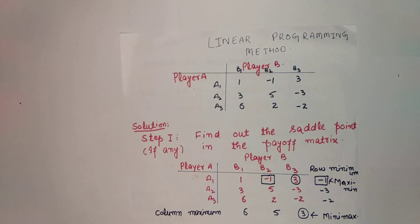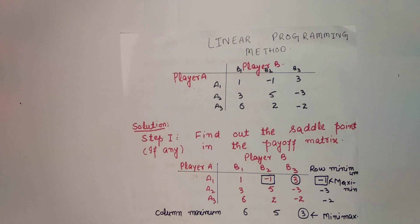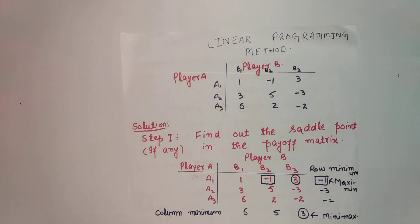Hello friends, welcome to my YouTube channel. Today we are going to discuss the linear programming method for finding the value of a game and the optimal strategy for player A as well as player B. I had already discussed this method in Hindi — if you want to watch in Hindi, I provided a link in the description. Please watch this video step by step till the end; I am sure you will understand. If you have any doubt regarding this method, you can ask me — I have provided my WhatsApp number in the description. So let us start.